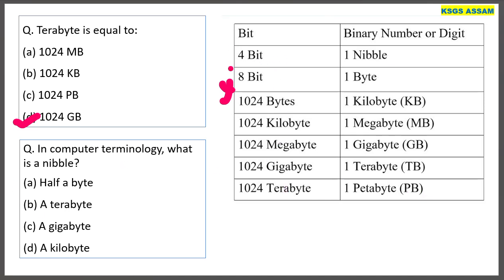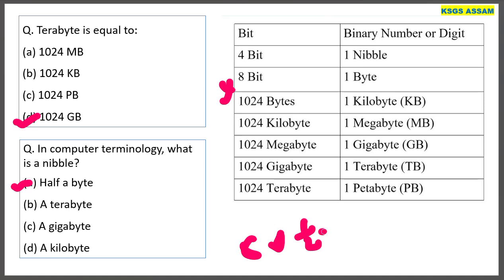In computer terminology, what is a nibble? A nibble is half of a byte. 1 byte is 8 bits, so 4 bits (8 divided by 2) equals half a byte — that is a nibble.